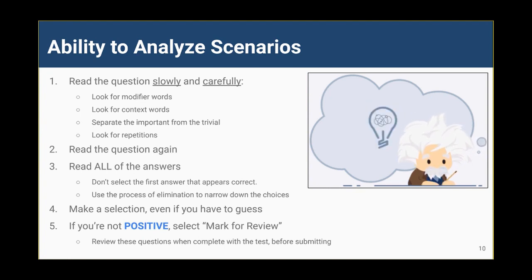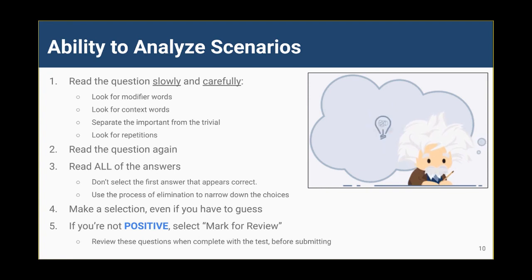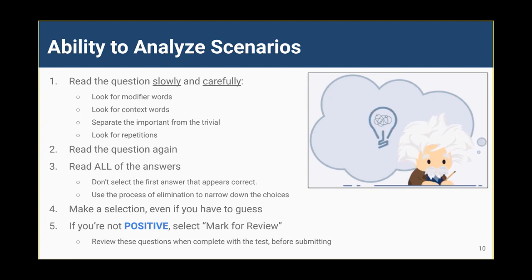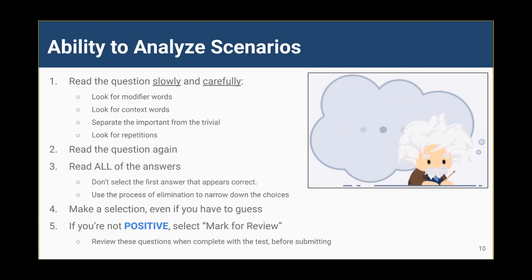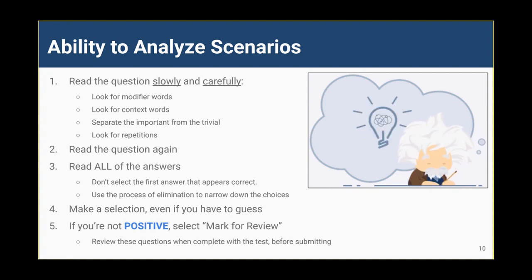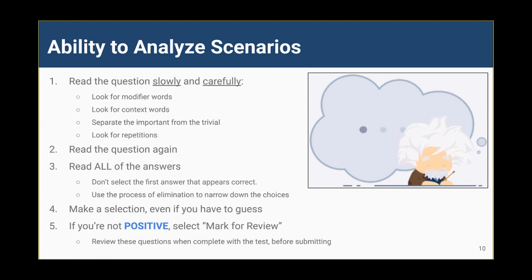Context words are clues and help you answer the question if you can spot them. I use this term to refer to words that hint at the functional area, feature, setting, permission, etc. being queried. Examples include 'automate,' 'share,' 'permission,' 'parent-child,' 'custom standard object,' etc. Salesforce will often include extra details in scenario-based questions that seem to provide context but aren't essential in understanding what the question is really asking. This is trivial information. Separating the important from the trivial is an important skill to develop.